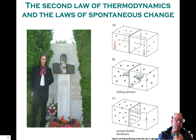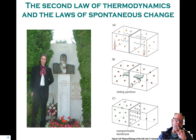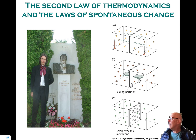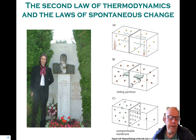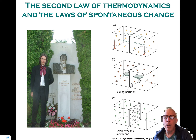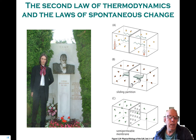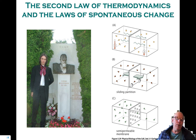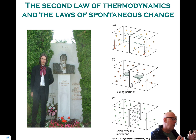So what does the second law of thermodynamics say? It says something that's almost a tautology in the sense that systems started out in an improbable state will evolve until they reach the most probable state.